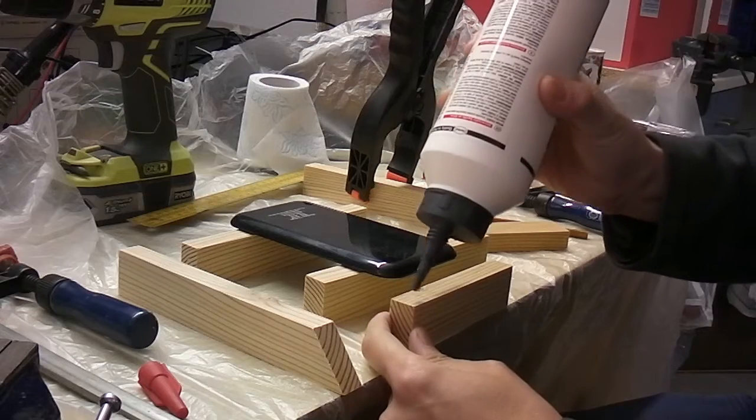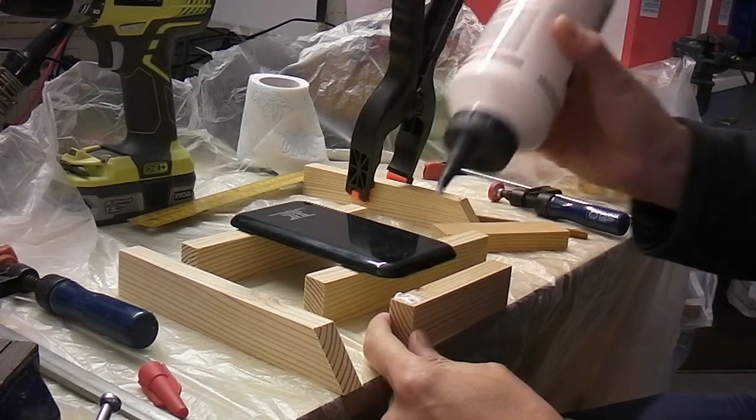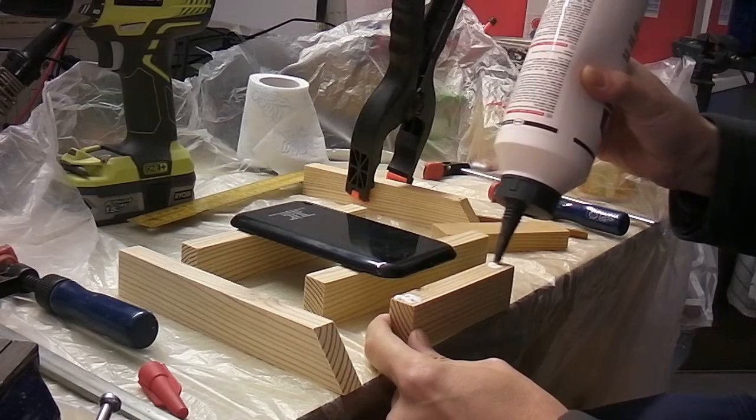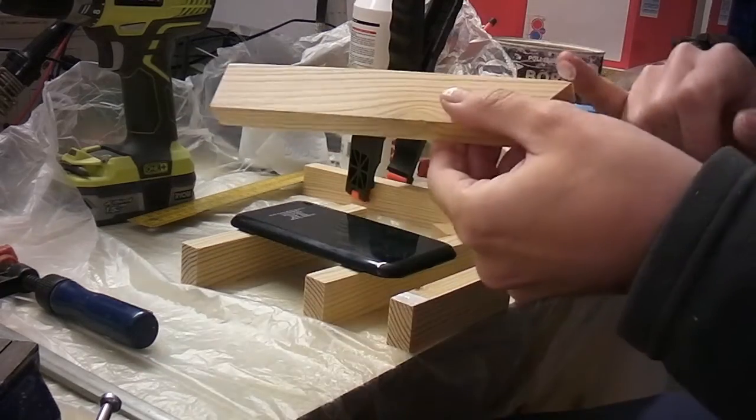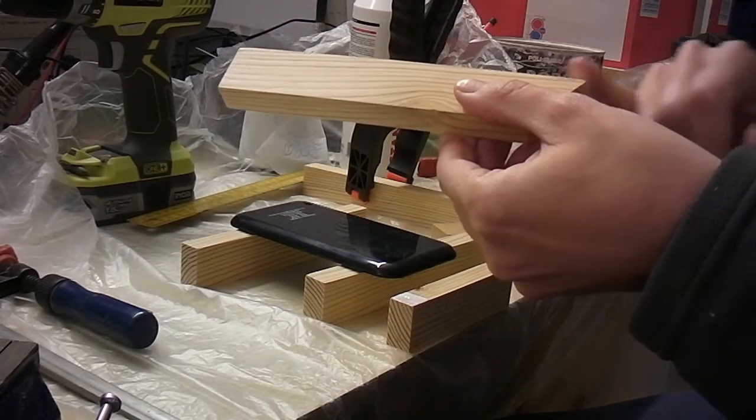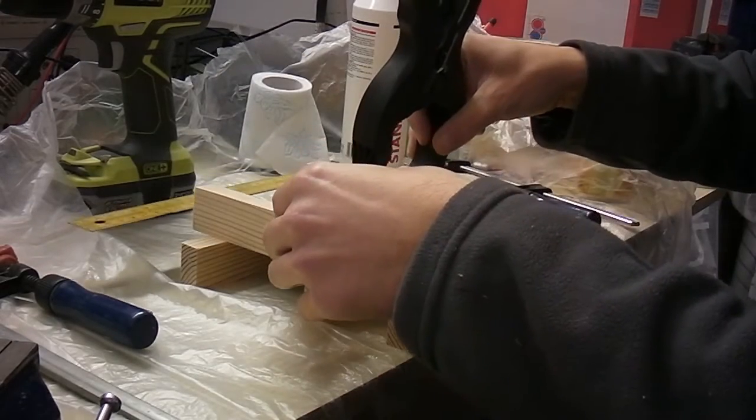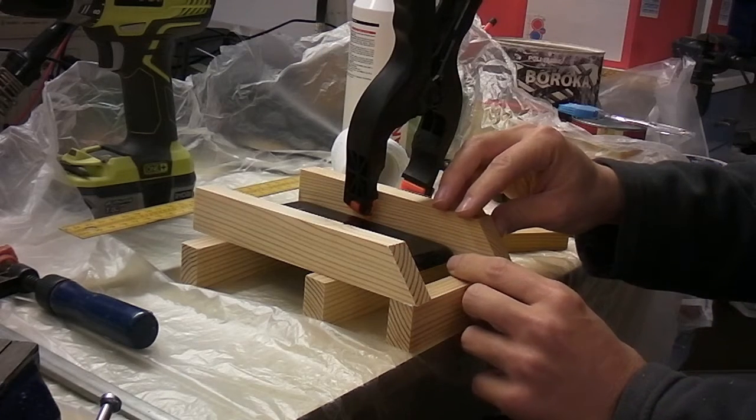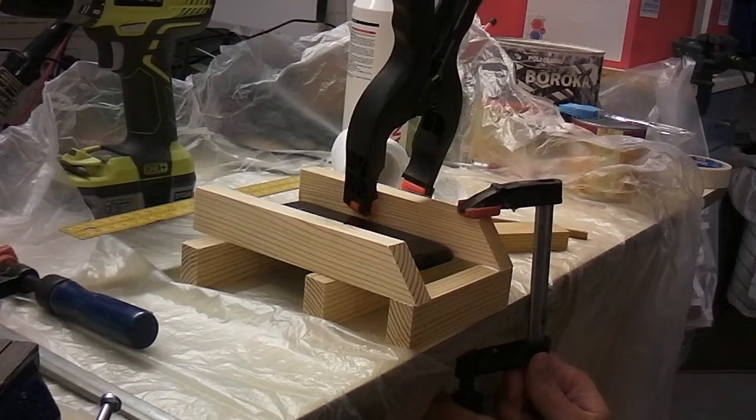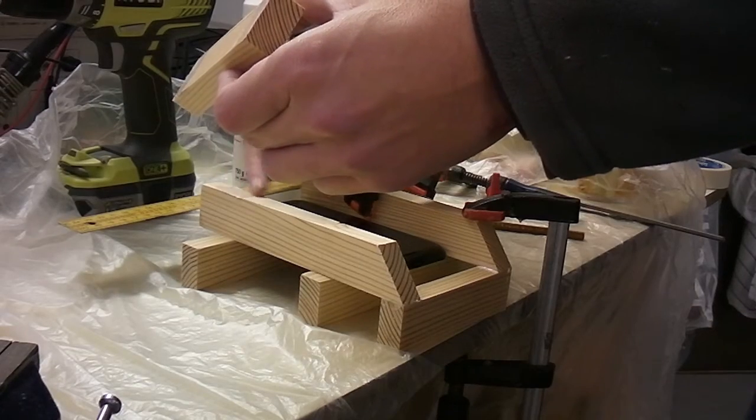First I have glued the angled piece to the front vertical piece. Use the actual charger as a spacer, but take good care for the 90 degrees. Then glued the back vertical piece.